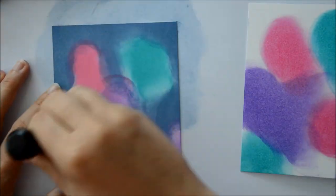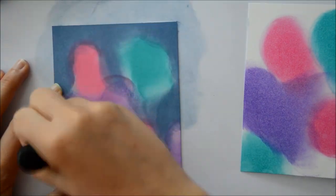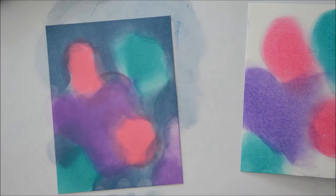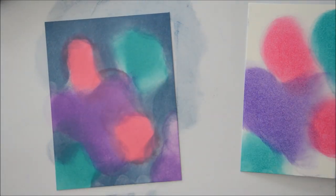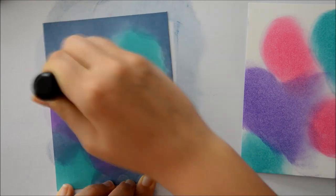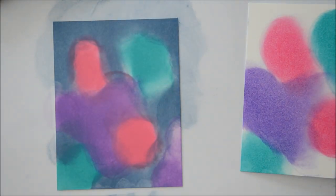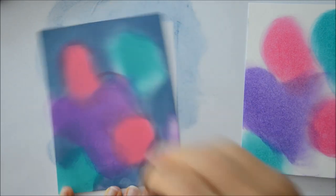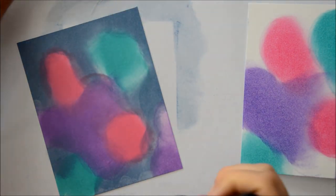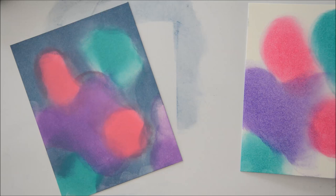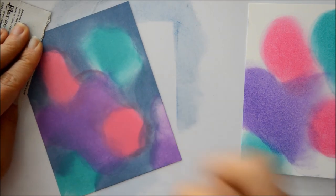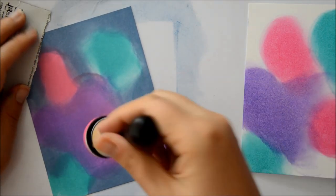And already now you can see the difference you get between the background I am making with the oxides and the one with the distress inks. The distress inks are more vibrant, but the distress oxides have this soft, it has been defined chalky look, but I would call it more like a velvety feel. Like when I showed the cards to my husband, he said it looks like the card would be soft when you touch it and I think that's a really nice way to describe it.